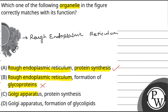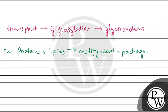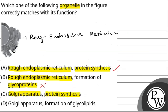Option C is Golgi apparatus and protein synthesis. The Golgi apparatus's primary function is to modify, sort, and package proteins and lipids. These organelles don't synthesize proteins — they process the proteins synthesized by the RER. That's why this option is wrong.